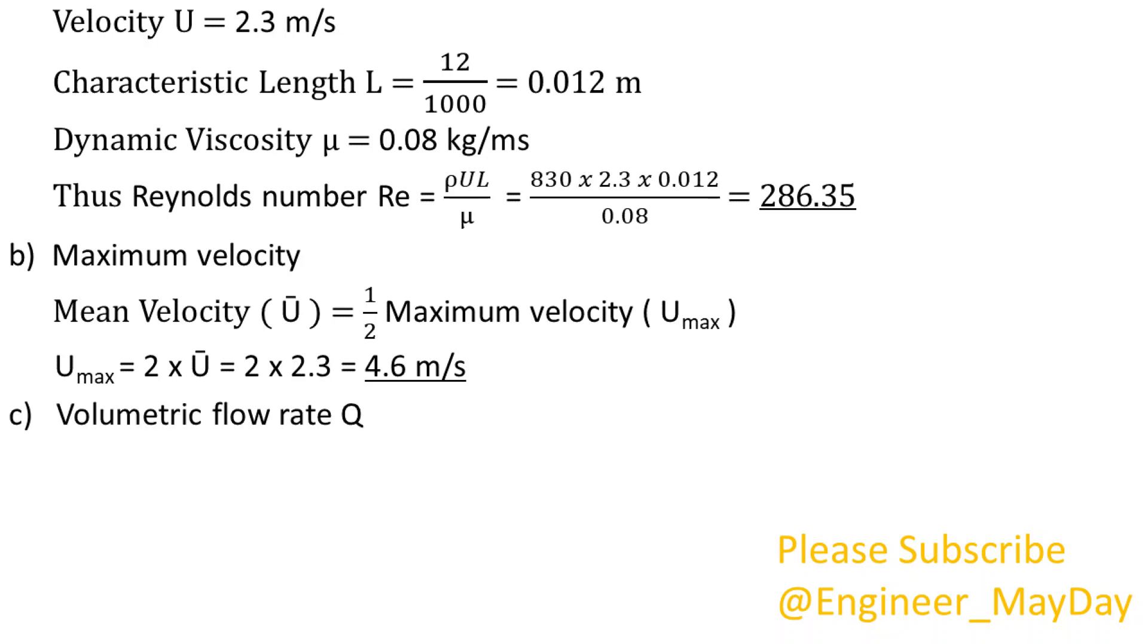Volumetric flow rate Q. Volumetric flow rate Q is equal to area multiplied by mean velocity. Thus we get 2.601 times 10 power minus 4 cubic meters per second.